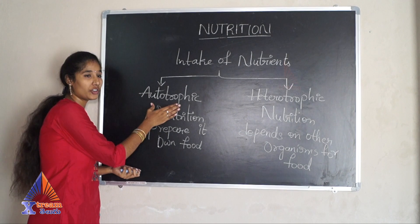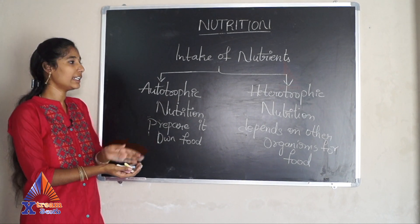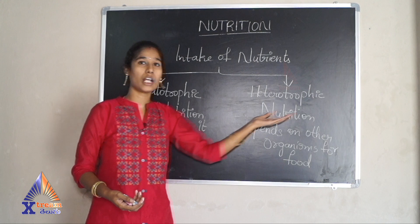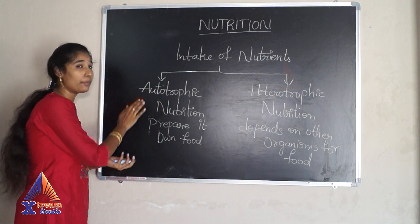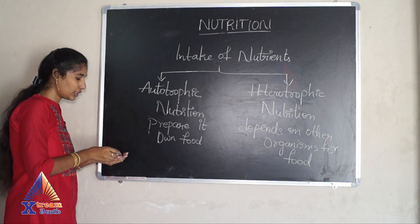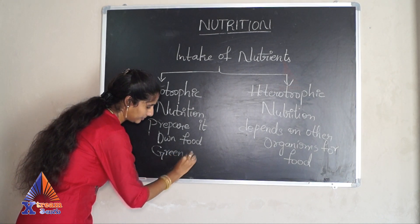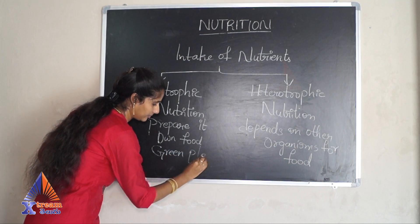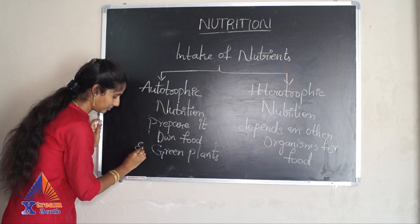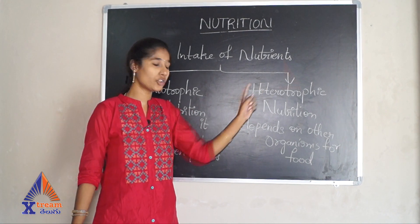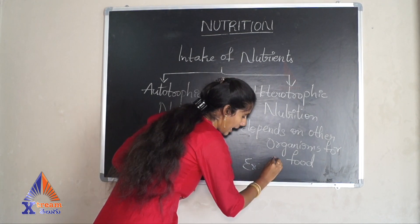Autotrophic nutrition means the organism prepares its own food. Heterotrophic nutrition means it depends on other organisms for food. The example of autotrophic nutrition is green plants, and the example of heterotrophic nutrition is animals.